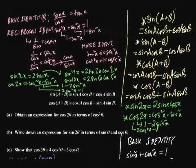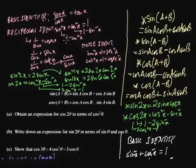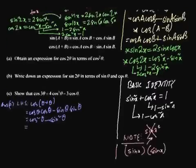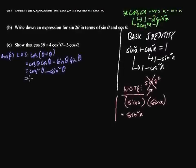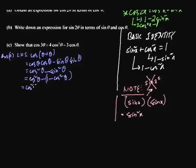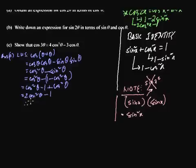We need to express this in terms of cos squared theta, so we use the identity sine squared theta equals 1 minus cos squared theta. Substituting: cos squared theta minus (1 minus cos squared theta). Expanding the bracket: cos squared theta minus 1 plus cos squared theta, which gives 2 cos squared theta minus 1. Therefore cos 2 theta equals 2 cos squared theta minus 1. Proved.